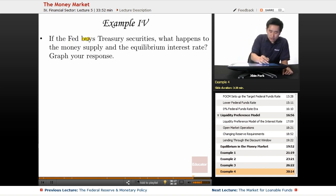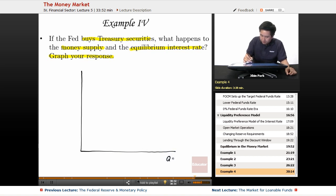So let's look at the opposite situation. If the Fed buys Treasury securities, what happens to the money supply and the equilibrium interest rate? Graph your response here. You want to draw a nice big graph here.